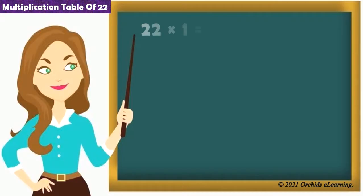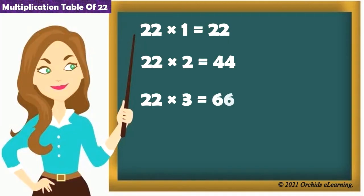22 1s are 22. 22 2s are 44. 22 3s are 66. 22 4s are 88. 22 5s are 110.